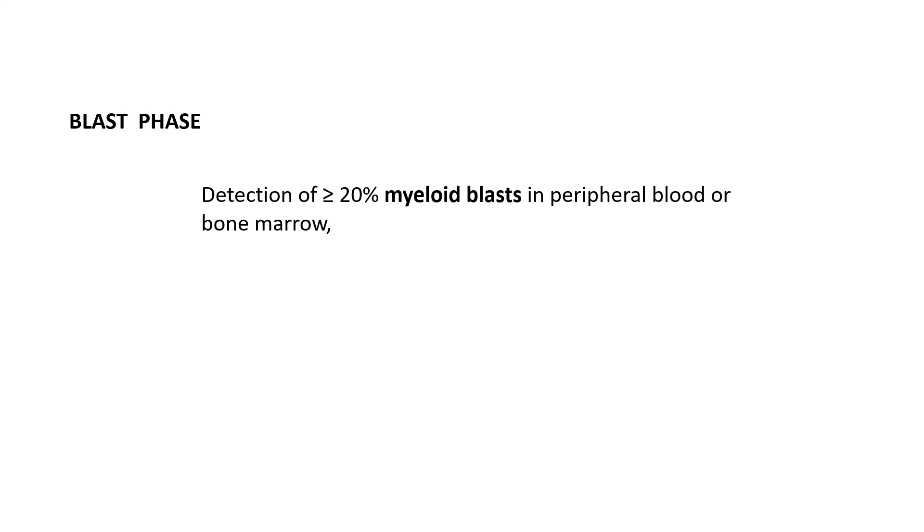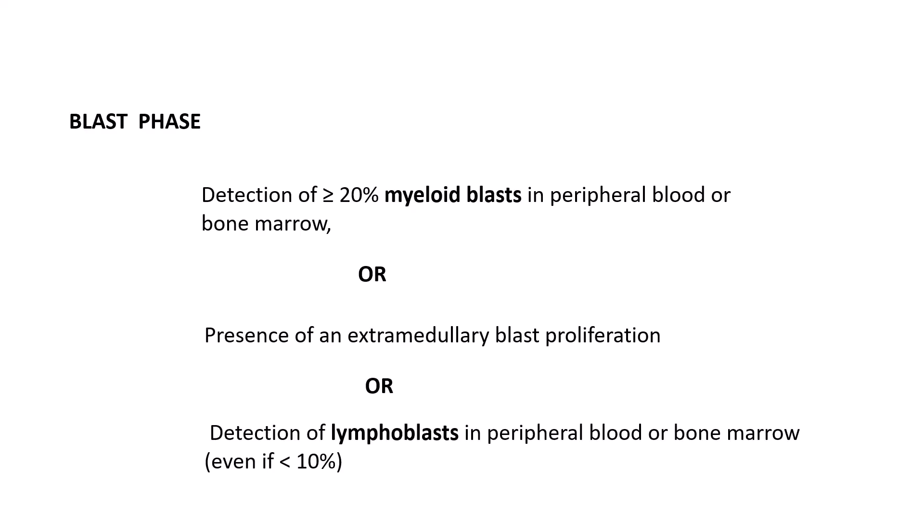Moving on to the blast phase, there is a criteria to diagnose it. First, you should see more than 20% myeloid blasts in the peripheral smear or bone marrow — this is called CML blast phase. If increased blasts are not found but there is presence of extramedullary blast formation in the spleen, liver, or anywhere else, that also qualifies as blast phase. Importantly, if you find lymphoblasts in the peripheral smear or bone marrow — even less than 10% — you can call it blast phase of CML.